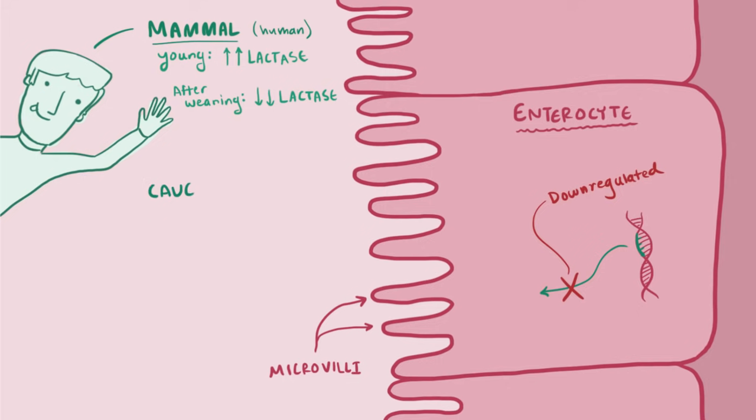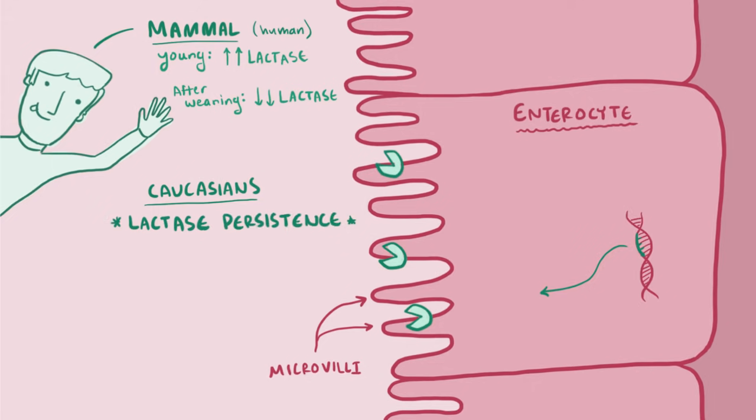Interestingly though, the majority of Caucasians, mainly those from Northern European background, continue having elevated lactase activity all the way into adulthood, and so they exhibit lactase persistence. Why Caucasians? Well, this group historically has domesticated cows and other milk providers and consumed lactose-based or milk-based products into adulthood. And by natural selection, it's thought that they've developed increased persistence of lactase production by specific gene mutations that are often autosomal dominant.